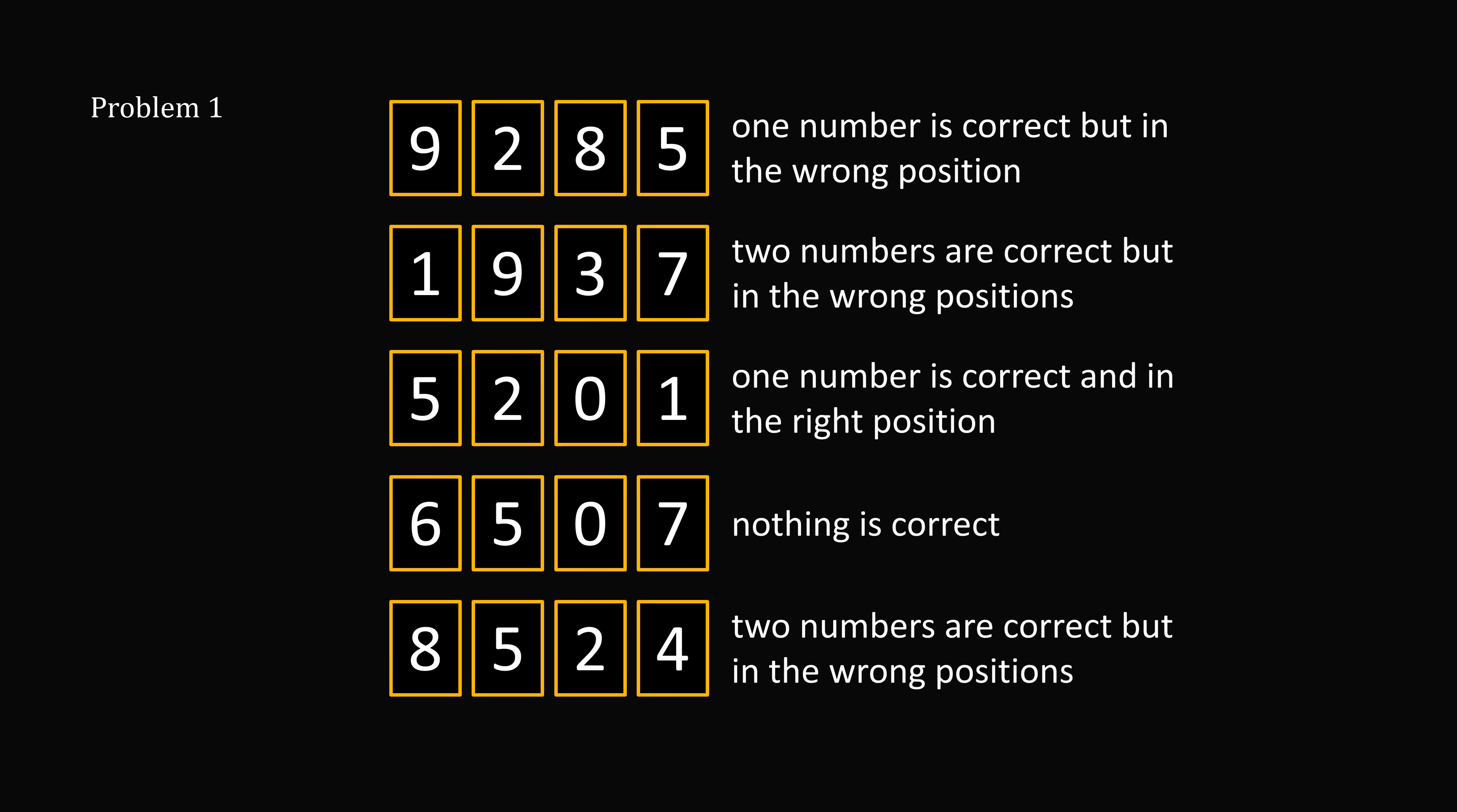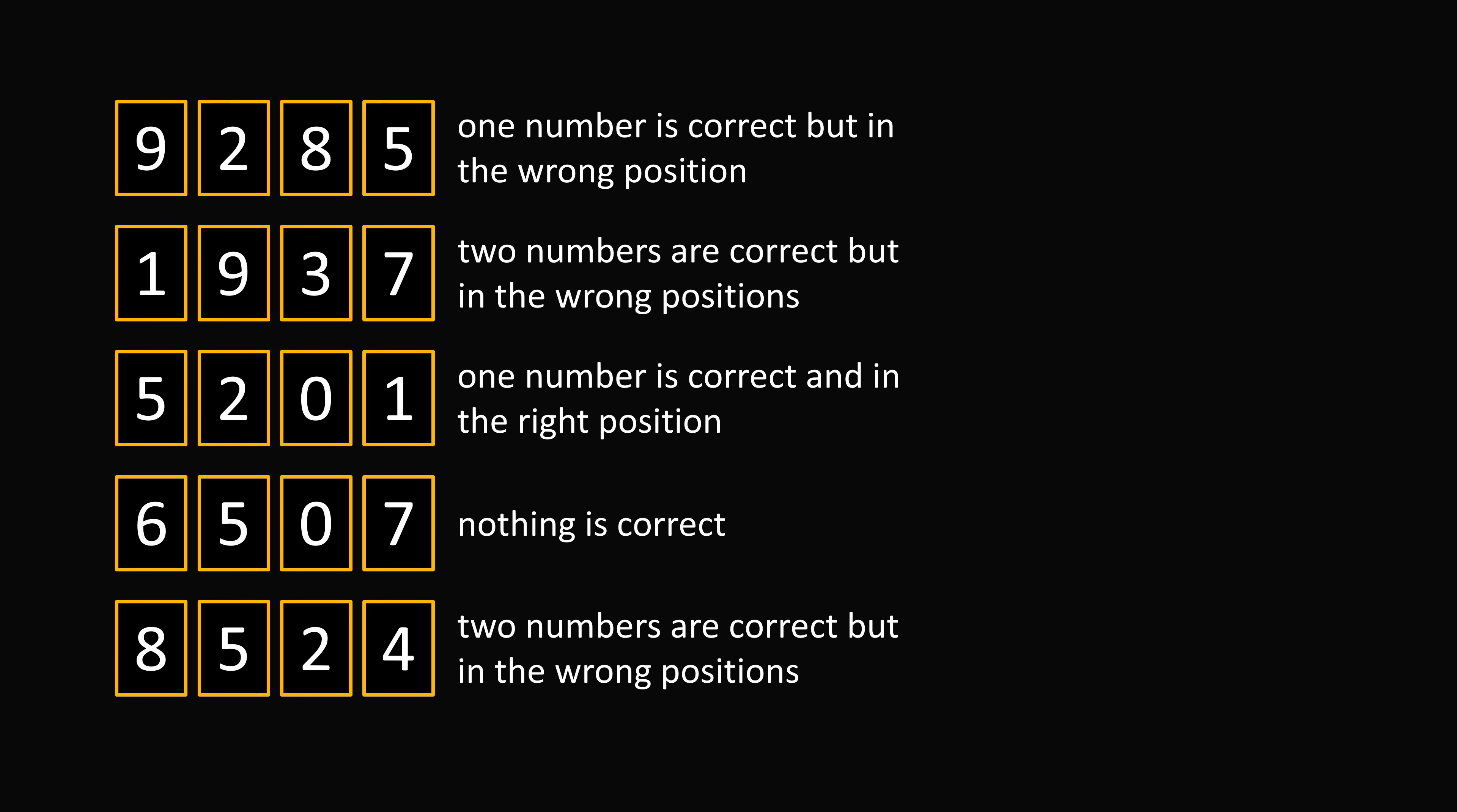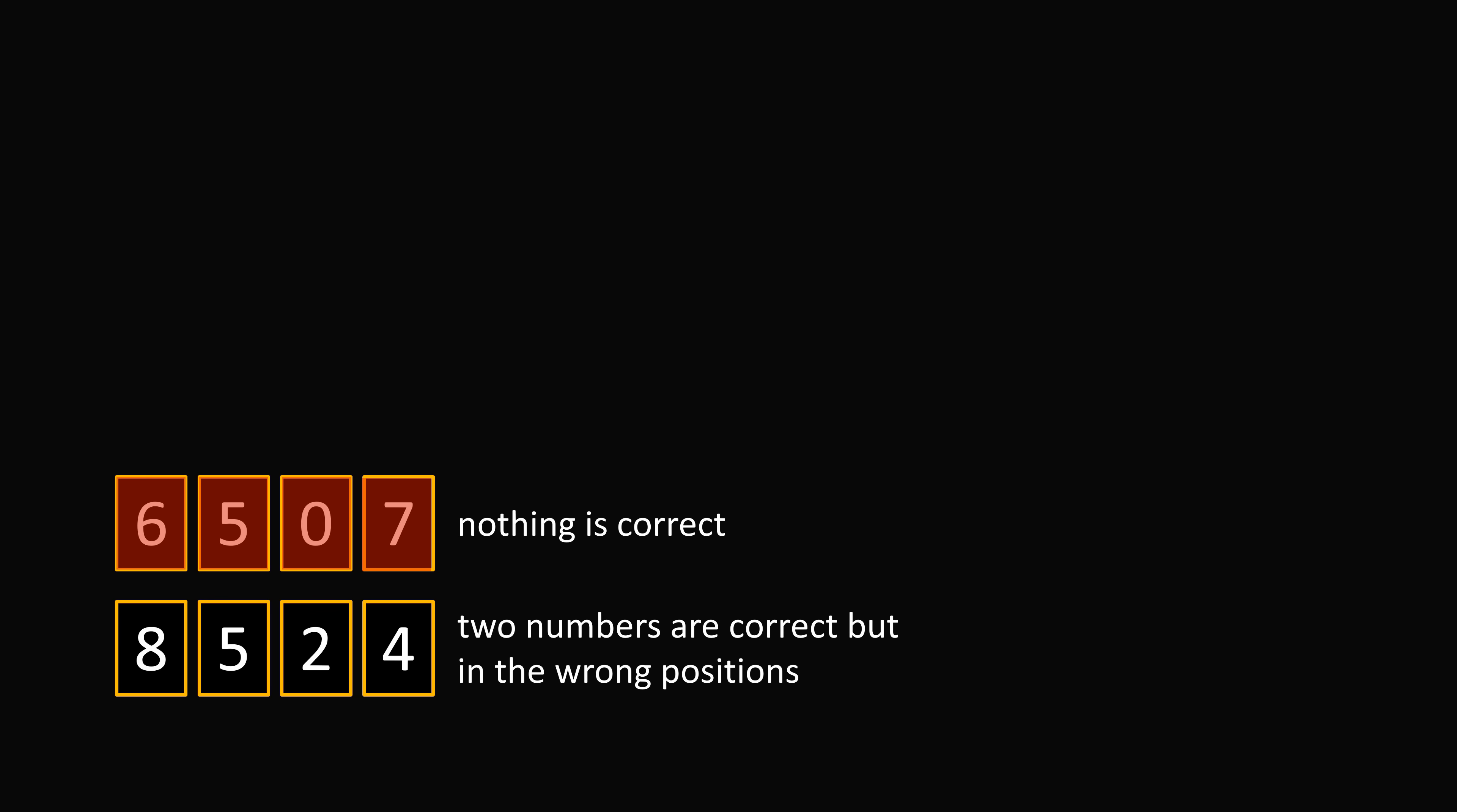Let's solve problem 1. When I see a puzzle like this, I approach it by looking at one of the clues. If you have a clue where nothing is correct, I think that's a good place to start because it gives a lot of information. So we know 6507, all of these digits are wrong. So now let's look at the last clue. We know that the digit 5 is wrong. So we have 8, 2, and 4. Of these three digits, we know two numbers are correct. So the correct numbers could be 2 and 8, 2 and 4, or 4 and 8. These are the only three possibilities.